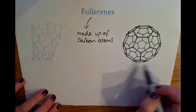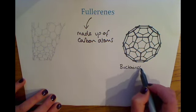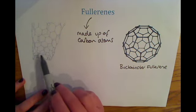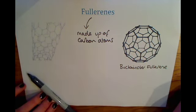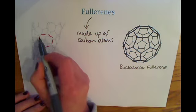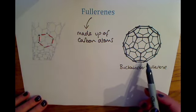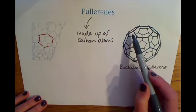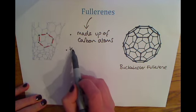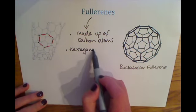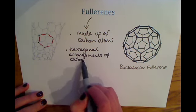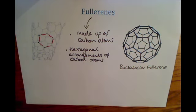This one has an almost spherical shape and is called the Buckminster fullerene. Fullerenes are made up of hexagonal arrangements of carbon atoms — you can see one here as an example. The Buckminster fullerene is mainly made up of hexagonal arrangements, although there are a couple of pentagons as well to allow it to form this shape. It's all made up of carbon atoms, nothing else in between.